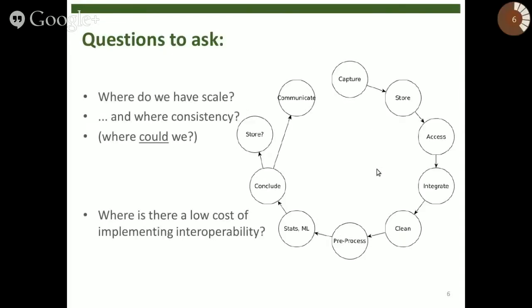So within this, I think we need to ask some questions. Where might we find scale? Where would we have consistency? Where could we do so if we were to increase the amount of interoperability existing in the system? Where could we be able to move some of our inconsistent data models, for example, to be a slightly more consistent view of the world and therefore enable some of these savings? Where might there be a low cost implementation of interoperability? And that might arise from things like a low cost from commodity software and tools.